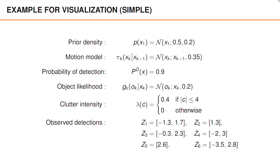The measurements at the first three time steps are identical to before, but we now consider a longer time sequence and receive two measurements at time 4, one measurement at time 5, and two measurements at time 6. At all times we observe one measurement somewhere in an interval from 1.3 to 3, and this will be reflected in the posterior density of our state.